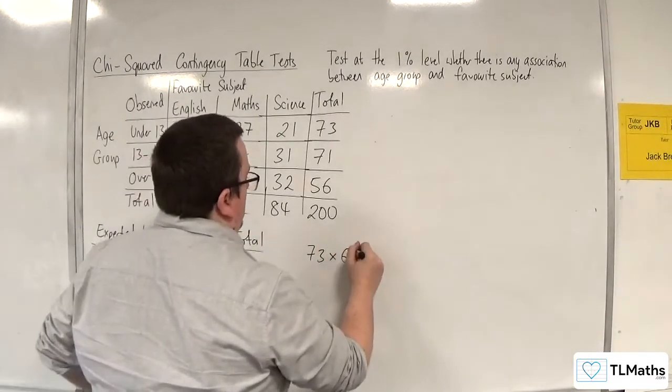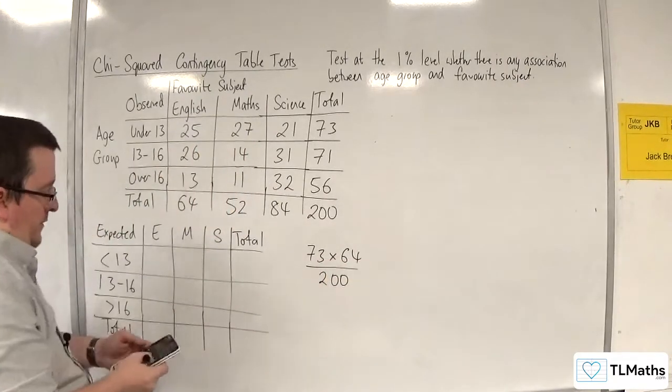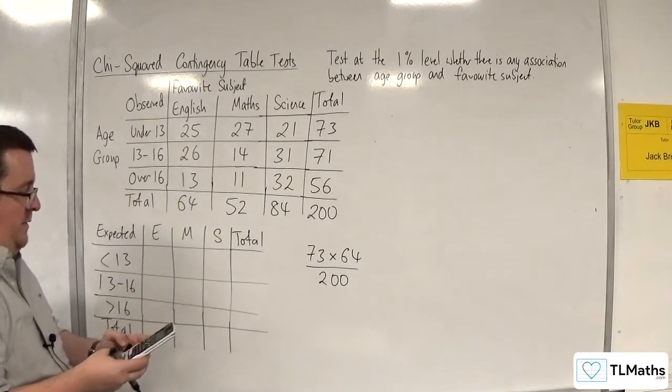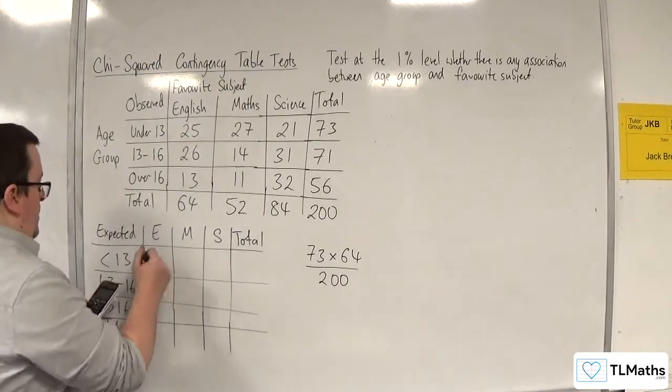And dividing that by the total, 200. So this is how I get the corresponding value that goes in here. 73 times 64 divided by 200 is 23.36.